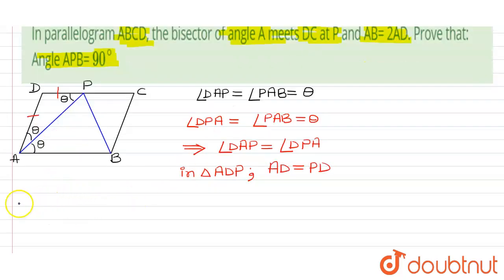Also we have given AB is equals to twice of AD. So CD can be written as DP plus PC is equals to twice of AD.